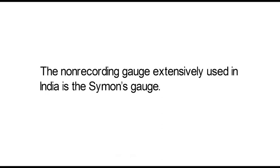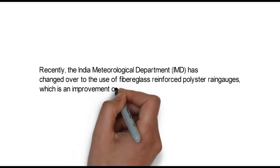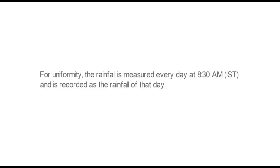It is the non-recording gauge which is extensively used in India. Recently, the India Meteorological Department has changed over to the use of fiberglass reinforced polyester rain gauges, which is an improvement over the Symon's gauge.